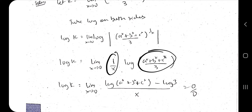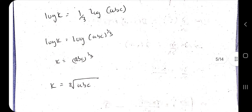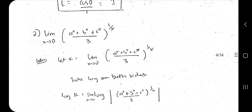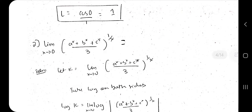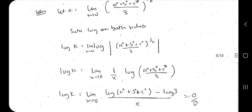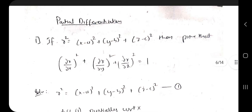Another type of question requires taking the log on both sides. If k equals the limit expression, taking log gives: log k = limit as x→0 of (1/x) times the log expression inside. Substituting x = 0 gives 0/0, so apply L'Hospital's rule — differentiate the numerator and denominator. After differentiating, you find the value of k is the cube root of abc. Since we had used k to represent the original expression, the final answer is that cube root of abc value.